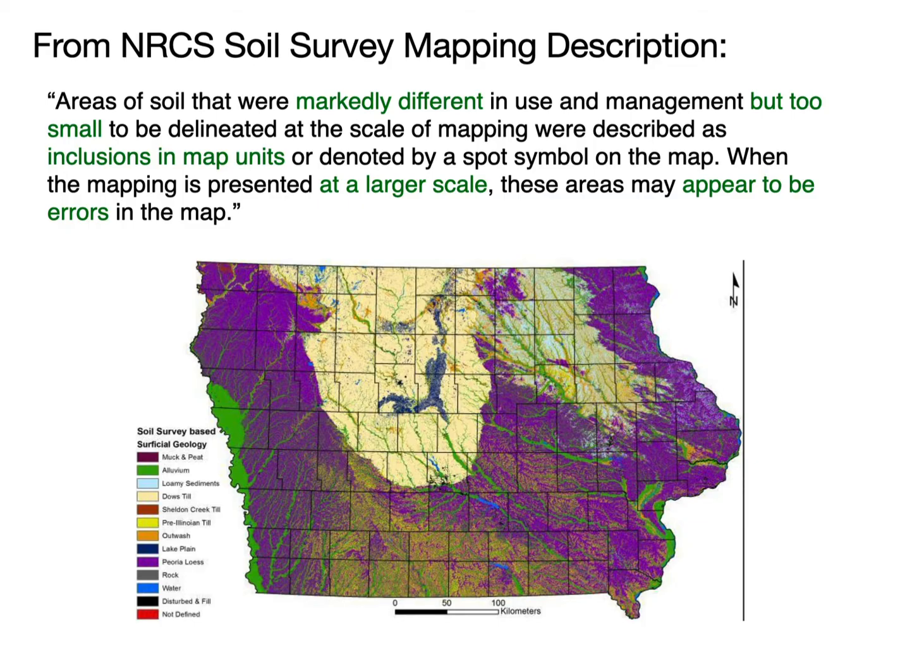If you look at soils data from the National Resource Conservation Service for Iowa, it says that areas of soils that were markedly different in use and management but too small to be delineated for these polygons or cells in the distribution were included inside the map units. So they appear to be errors at a larger scale if you really zoom in, and if you walk over the ground, you'll find something of a different kind.